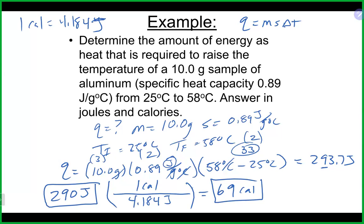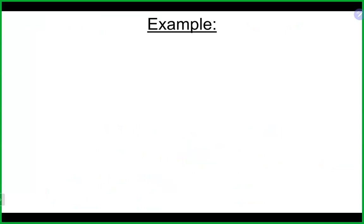Let's try another one. 294 joules of heat is transferred to 10 grams of silver at 25 degrees Celsius. What will be the final temperature of the silver if the specific heat capacity of silver is 0.24 joules per gram per degree Celsius? Take a few moments and see what you come up with.